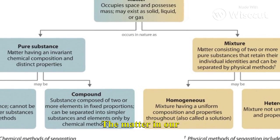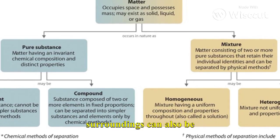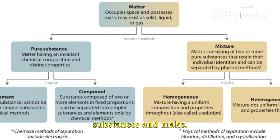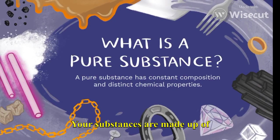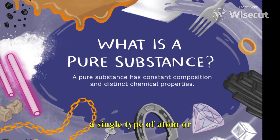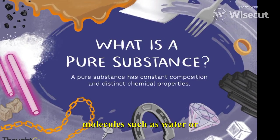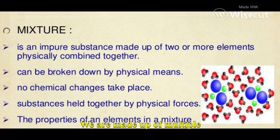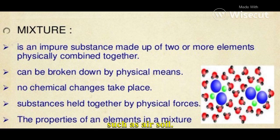The matter in our surroundings can also be classified as pure substances and mixtures. Pure substances are made up of a single type of atom or molecule, such as water or salt. Mixtures are made up of multiple types of atoms or molecules, such as air or soil.